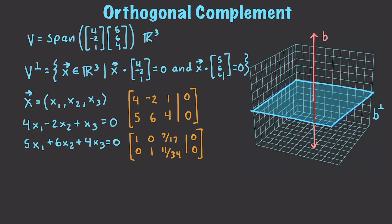So, after we get it into reduced row echelon form, we can pull back out into a system of equations. So, we're going to get X1 plus 7 over 17X3 equal to 0. And X2 plus 11 over 34X3 is equal to 0. And if I solve for the pivot variables in this situation, I'll end up having X1 is equal to negative 7 over 17X3 and X2 equal to negative 11 over 34X3.